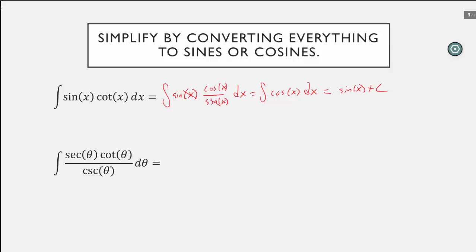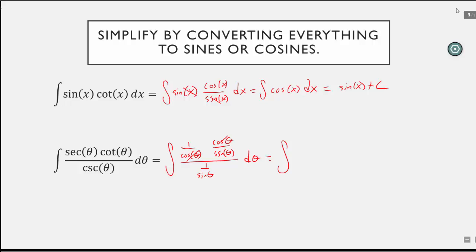A slightly more complicated example: if I convert everything to sines or cosines, I get one over cosine of theta times cosine of theta over sine of theta, and the denominator is one over sine of theta d theta. When I simplify, instead of dividing by one over sine theta, I multiply by its reciprocal. In the end I get the integral of one d theta, which is just theta. Here's our second example of how converting everything to sines or cosines makes this integrand much easier.